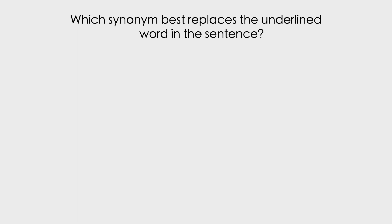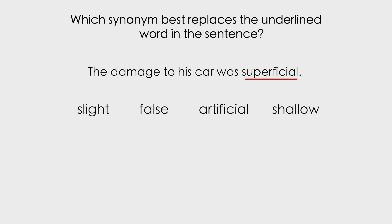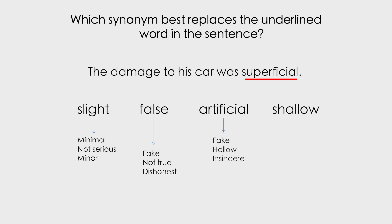So now we're going to have a go at doing one of these ourselves. Which synonym best replaces the underlined word in the sentence? The damage to his car was superficial. If you don't know what 'superficial' means, that doesn't matter, because you'll be able to hazard a guess from looking at the other synonyms and thinking about their meanings. We're given a choice of four: slight — minimal, not serious, minor; false — fake, not true, dishonest; artificial — fake, hollow, insincere; and shallow — simplistic, empty, hollow. Which out of these do you think is the most appropriate?